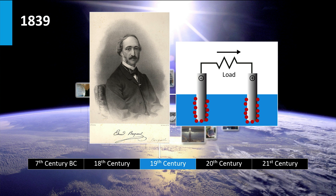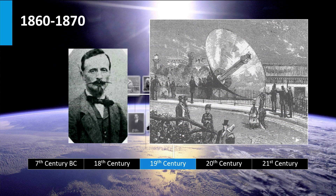An electrolyte is an electrically conducting solution, and in this case he used silver chloride placed in an acidic solution. By shining light on it, he observed that the current in the cell was enhanced. In the 1860s and 1870s, the French physicist Auguste Mouchot was developing solar-powered steam engines. He believed that coal resources were limited and developed the first parabolic trough solar collector. As coal became cheaper, the French government decided that solar energy was too expensive and stopped funding Mouchot's research.